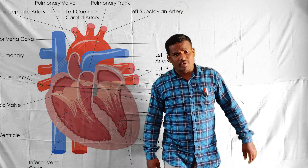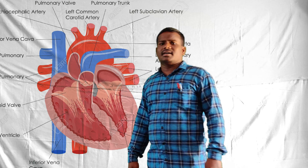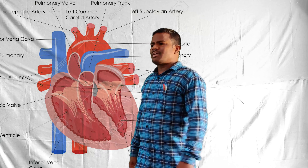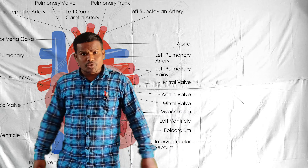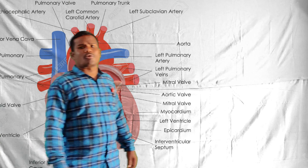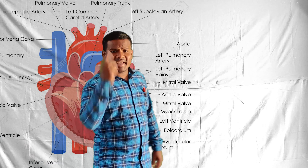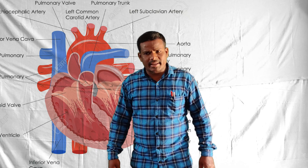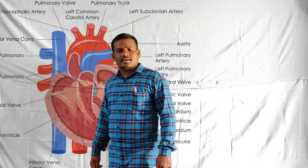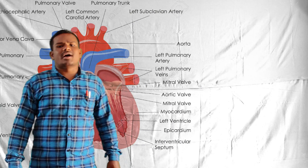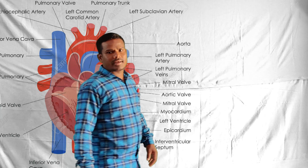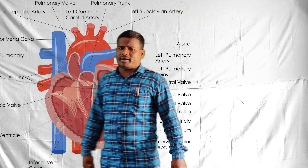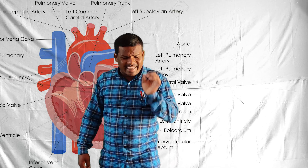Blood vessels - these are tubes. In the human body there are three kinds of blood vessels: the first one is arteries, the second one is veins, and the third one is blood capillaries. Arteries are thick regional vessels in the human body.